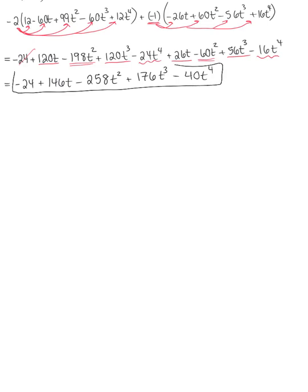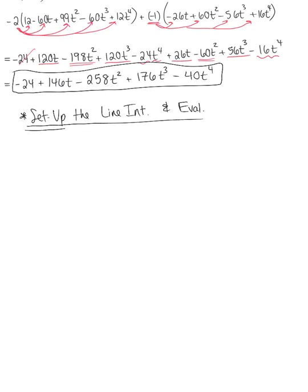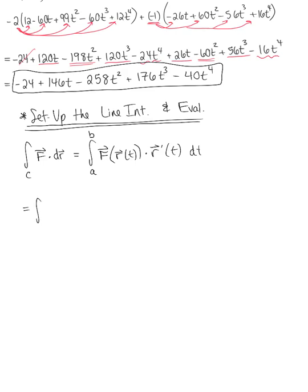This is the integrand, and we are ready to set up the vector line integral and evaluate. We had the line integral over C of the vector field dotted with d vector r, converted to the integral from 0 to 1 of the parametrized vector field dotted with the tangent vector dt. So plugging this in, we have the integral from 0 to 1 of minus 24 plus 146t minus 258t squared plus 176t cubed minus 40t to the fourth, dt.